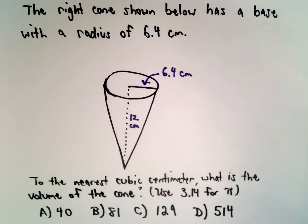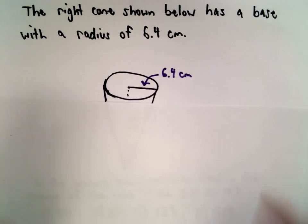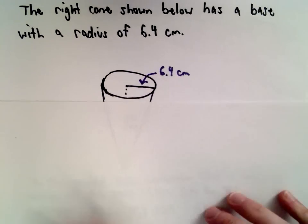We're going to approximate pi by using 3.14. Again, this is going to be a formula that's on your formula sheet when you take this.